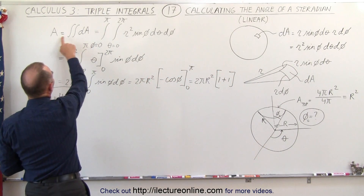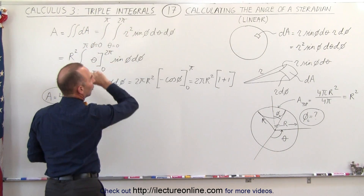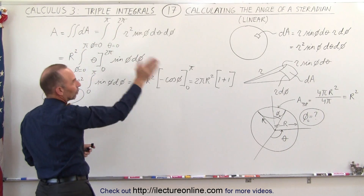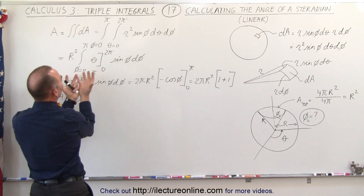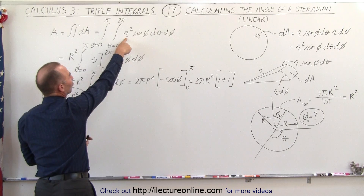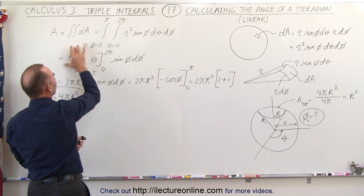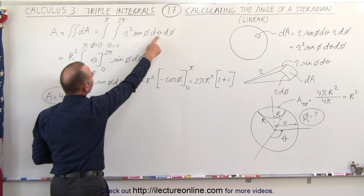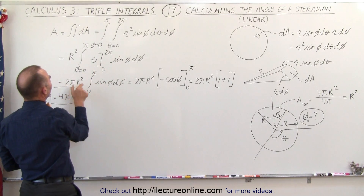If we now integrate over that area element — angle θ from 0 to 2π all the way around the sphere, and angle φ from 0 to π all the way from top to bottom — we should get the full surface area of a sphere. We take the area element, pull out r² as a constant, and integrate dθ, which gives θ from 0 to 2π, so this becomes 2π r².